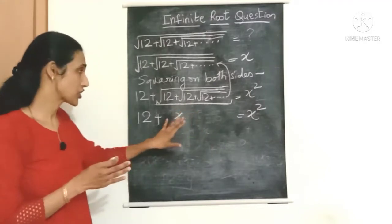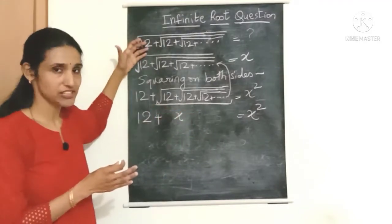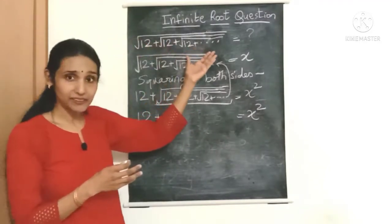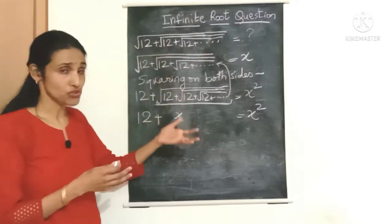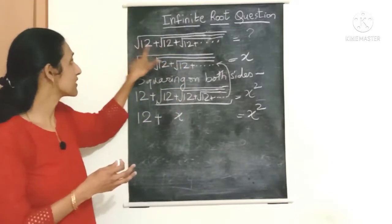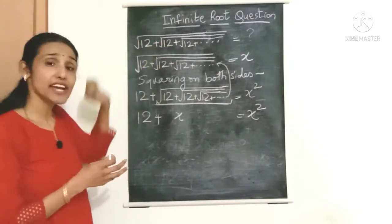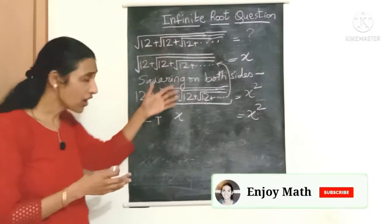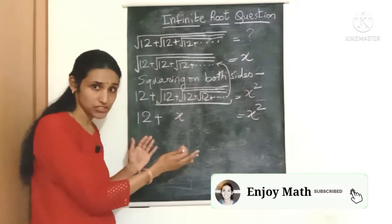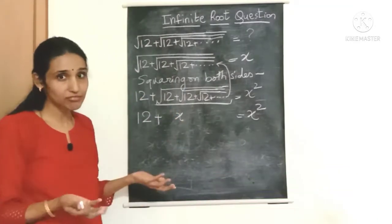This is the most important step in this question because we started with an expression which had infinite terms and even nested roots. So these are nested roots, see, you have a square root which is inside another root which is inside another root. These are called nested roots.